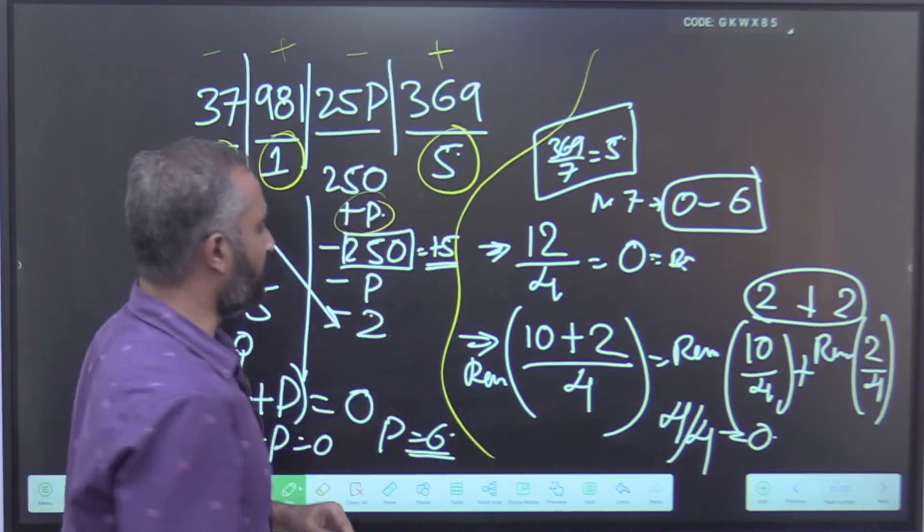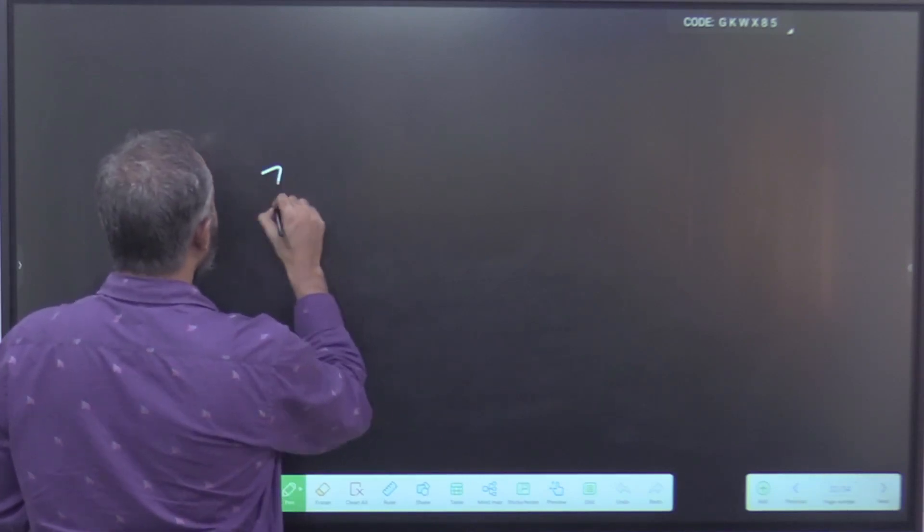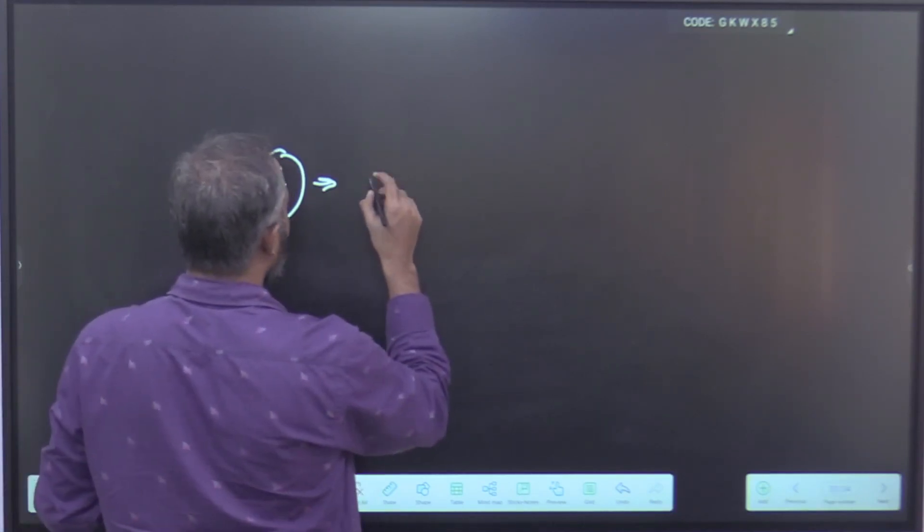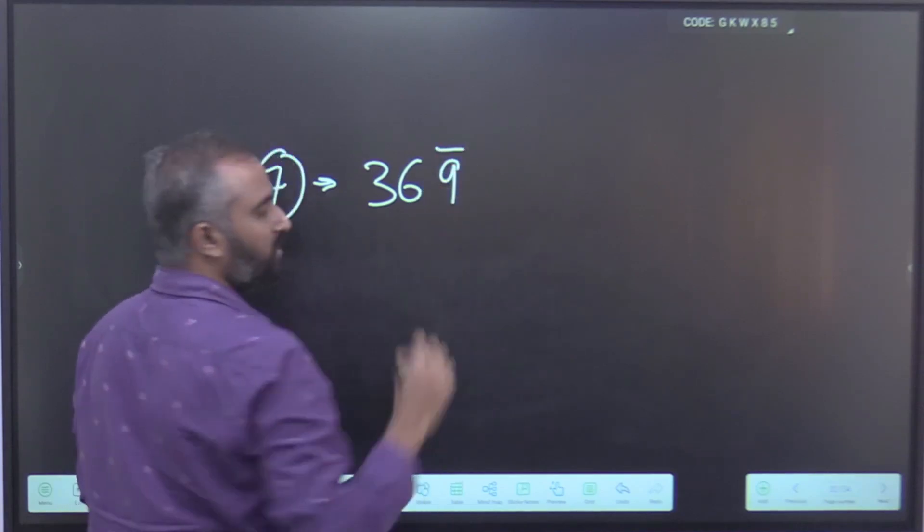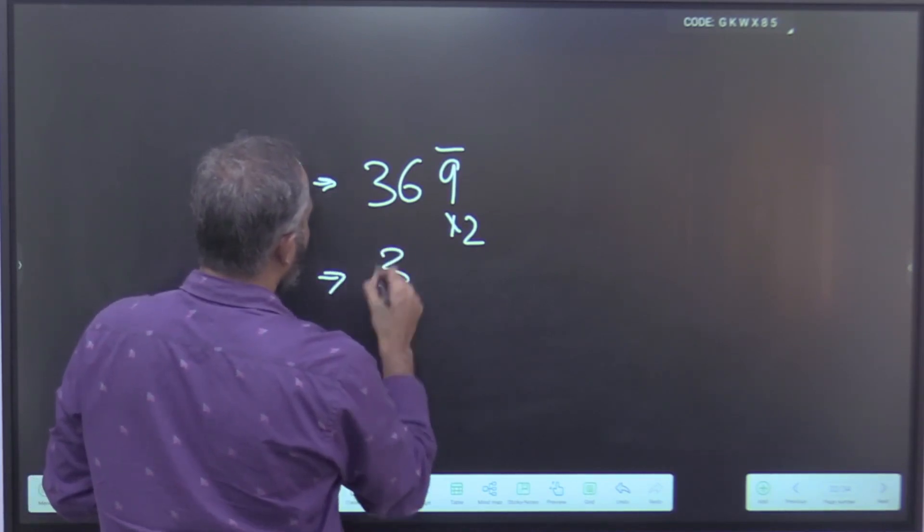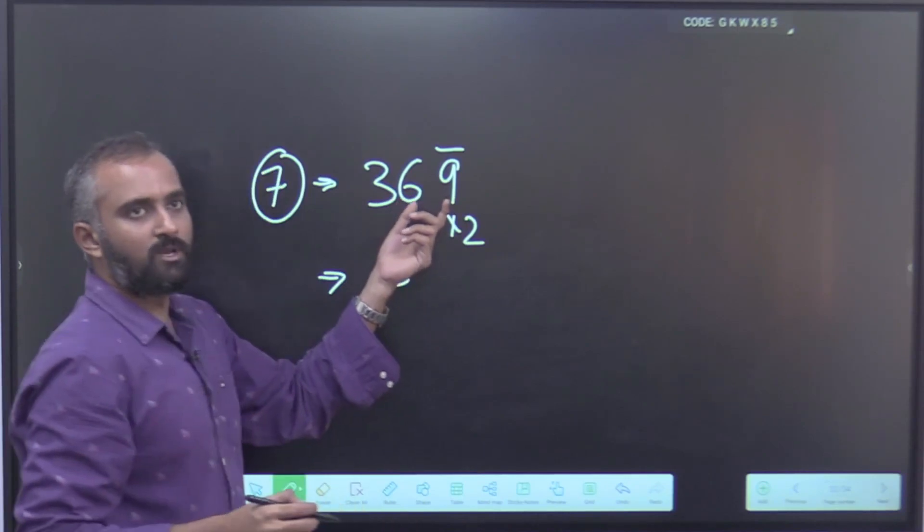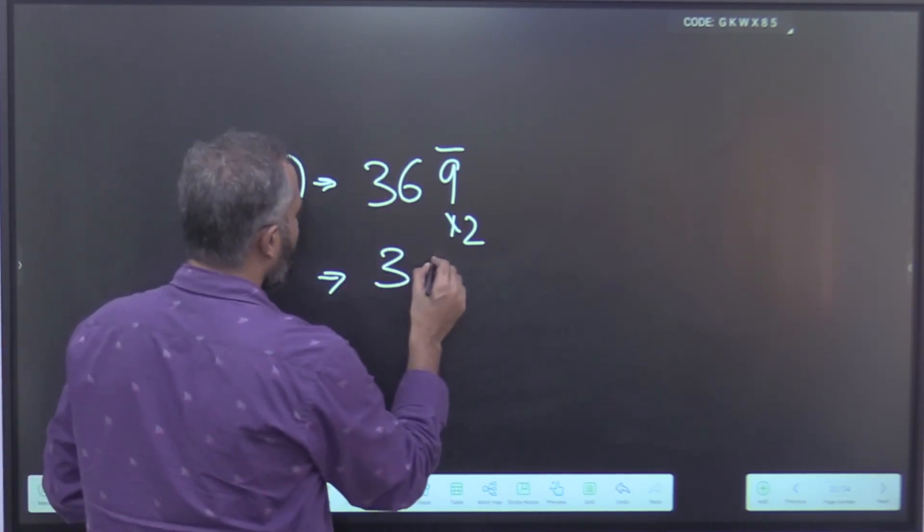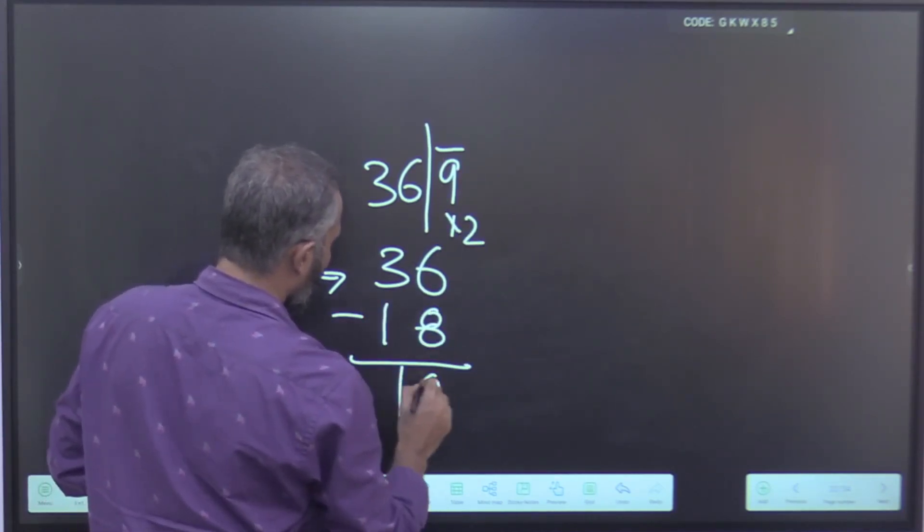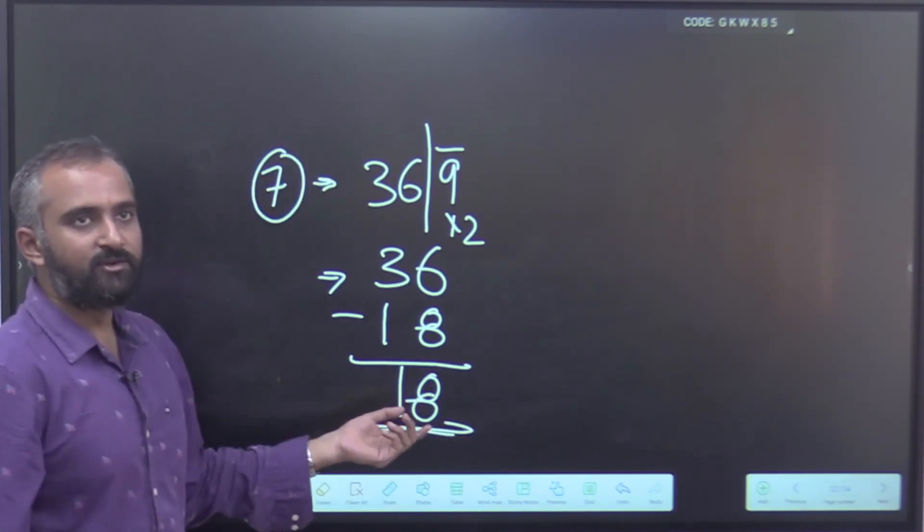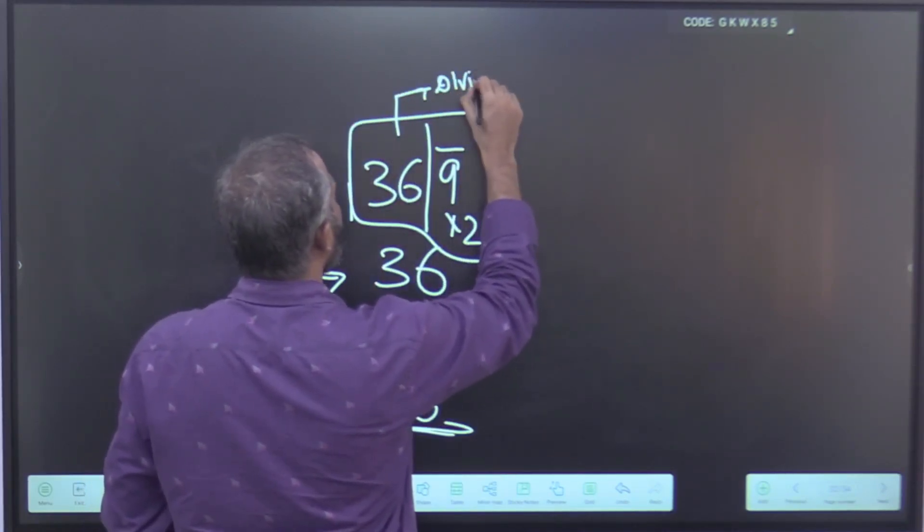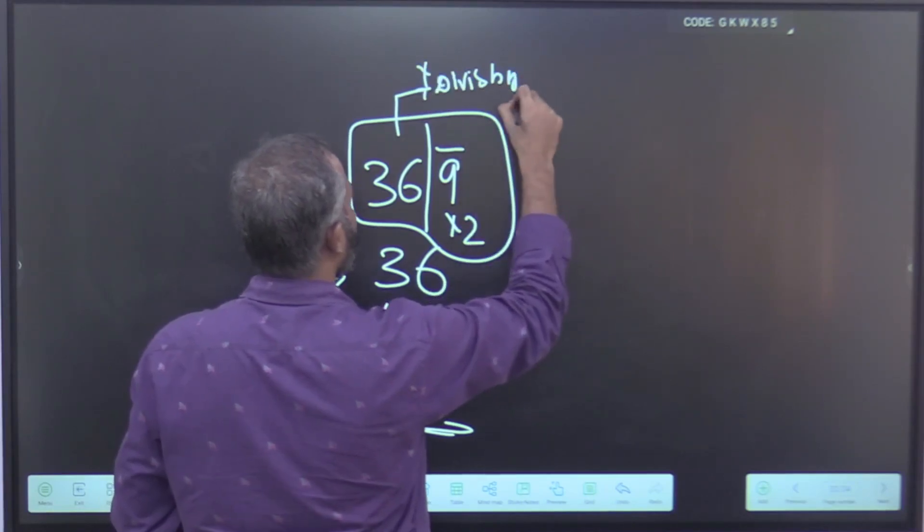And for people who still find it difficult to find reminders of three-digit numbers, this is level 1. For people who are still finding it difficult, consider the unit digit, multiply it by 2, and subtract from this. For example, 369, you want to know whether it is divisible by 7 or not. So consider 36, now 9×2 are 18, subtract from here we will get 18. Is 18 divisible by 7? No. So 369 is not divisible by 7.